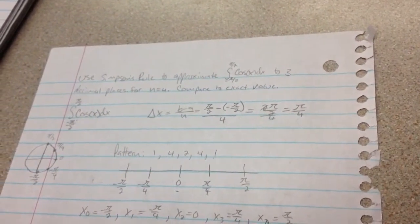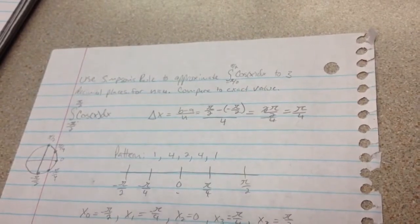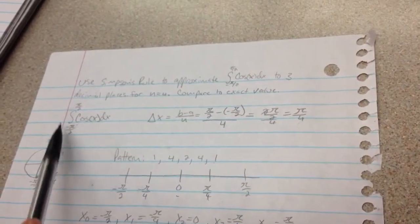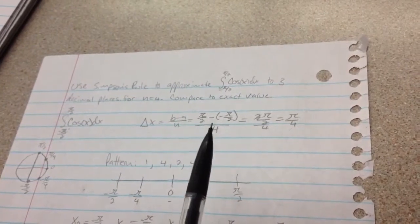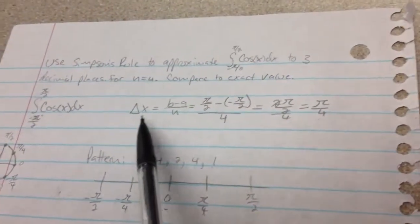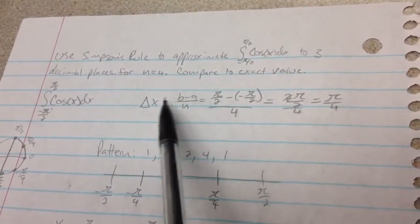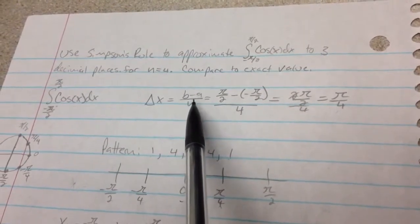Just for time purposes, I have everything all written out. So we're going to start with, here's our integral. We're going to start by solving for delta x. So delta x, and this is just something that you have to know, is always going to be equal to b minus a over n.